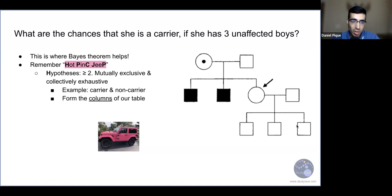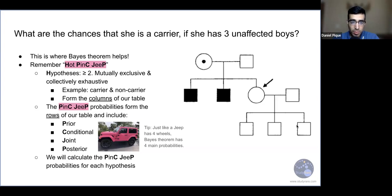Okay, so the H, the first letter, is for hypothesis. So there will be two or more hypotheses that we'll be testing. These hypotheses should be both mutually exclusive. So yes or no. In this case, either affected or unaffected. So totally different. And then collectively exhaustive. So these are the only two possibilities that there are, being either a carrier or a non-carrier. There's no third state. It's either one of these two. And these hypotheses are going to form the columns of our table.